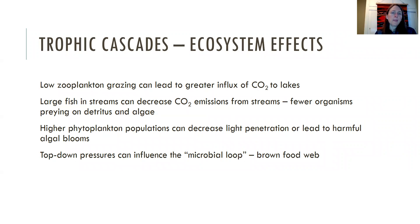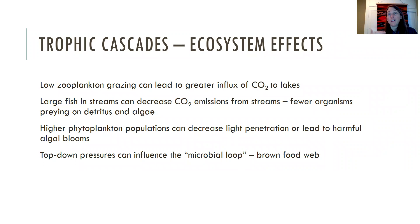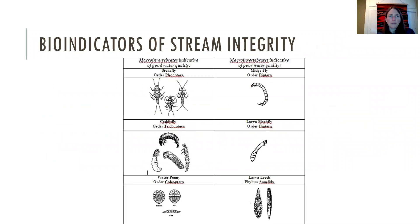Some other ecosystem effects of trophic cascades: low zooplankton grazing can lead to greater influx of CO2 to lakes, as more carbon is taken up by algae when grazers aren't applying much pressure. Large fish in a stream can decrease the amount of CO2 released because fewer organisms are preying on detritus and algae. Higher phytoplankton populations can decrease light penetration and cause harmful algal blooms, where toxins use up oxygen and cause fish kills. Top-down pressures can also influence the microbial loop, which is the brown food web.